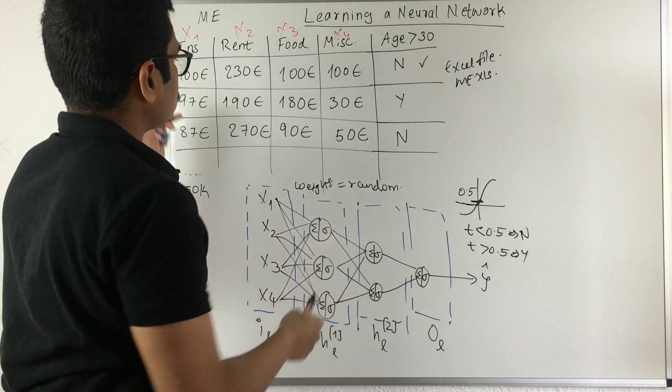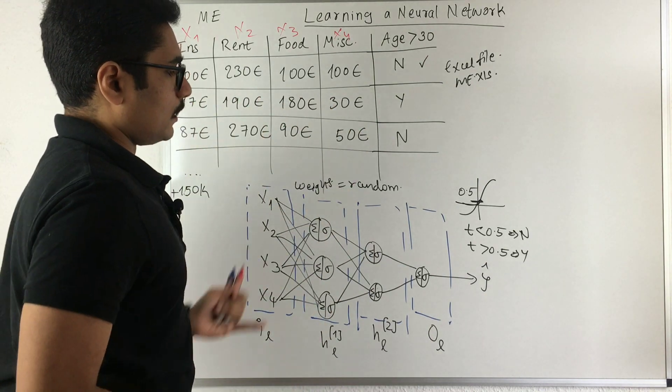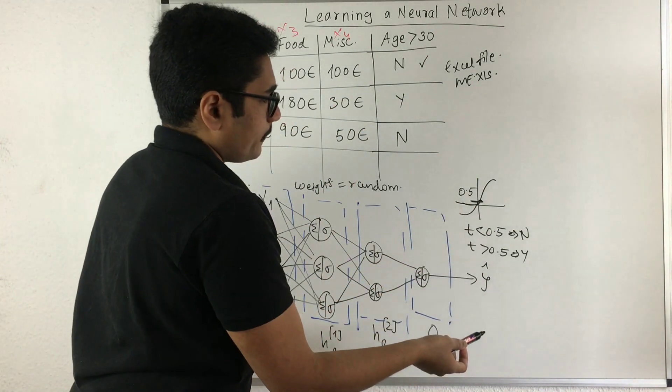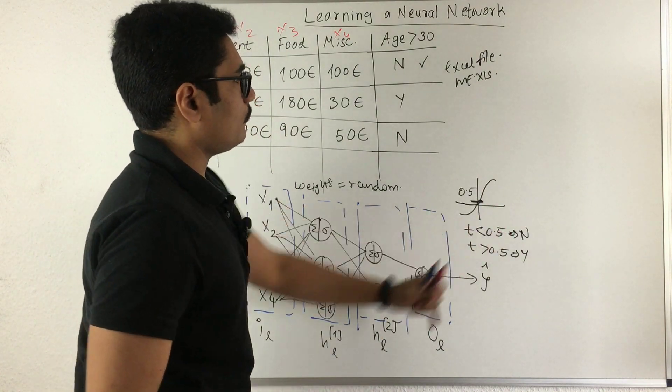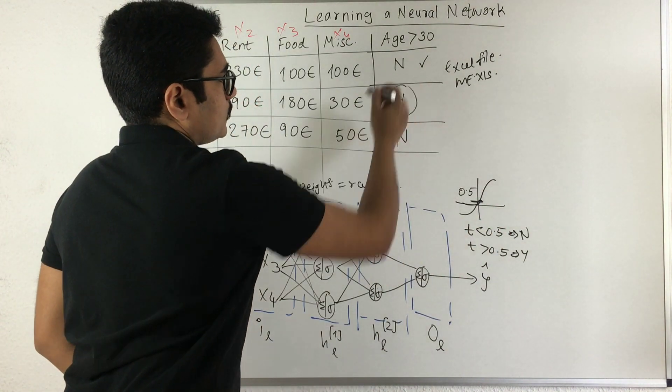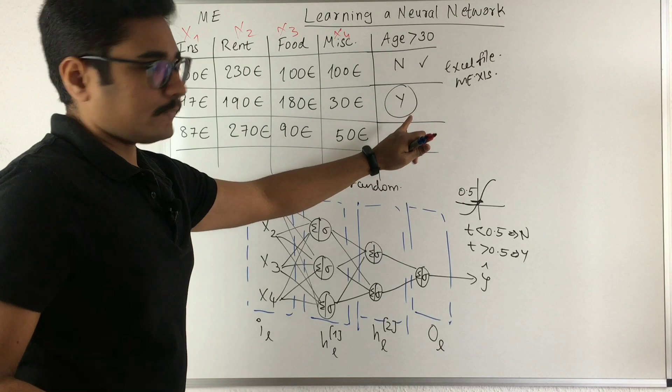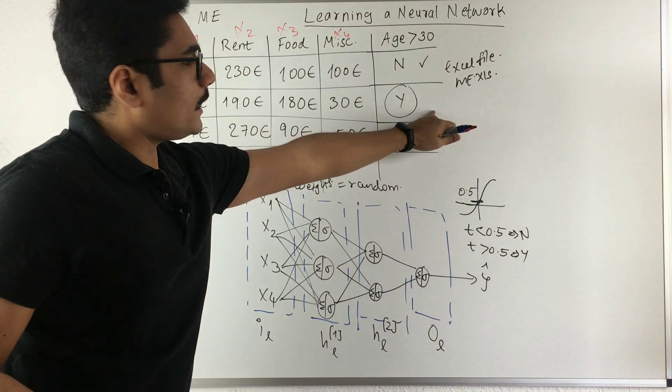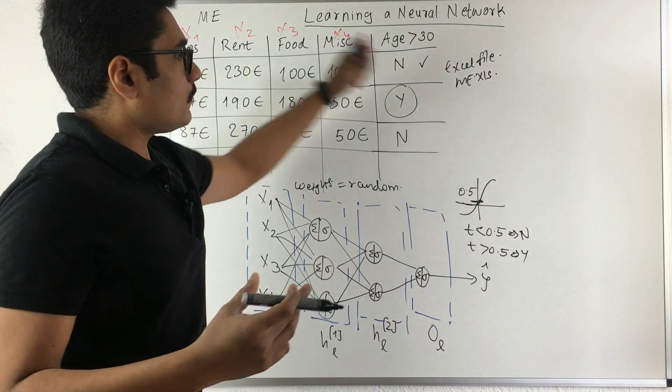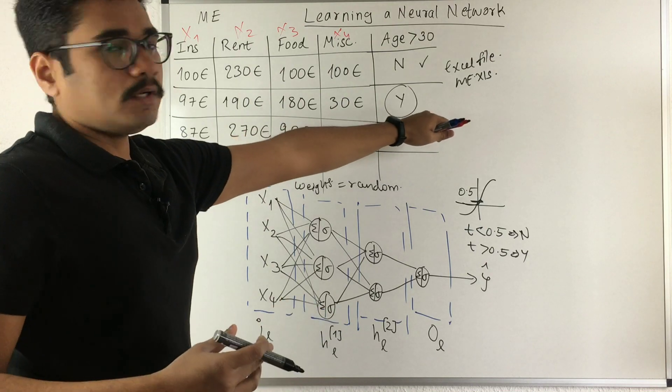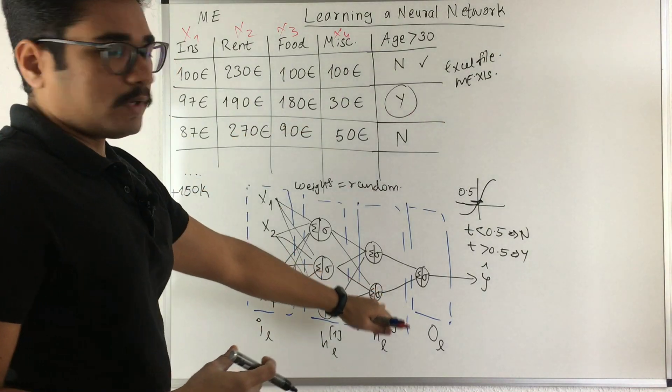Now for the second instance or second record, if we get the output as again less than 0.5, but here in our dataset it's written as yes. This is obtained by real valued record, so this need not be wrong, but our neural network can be wrong.